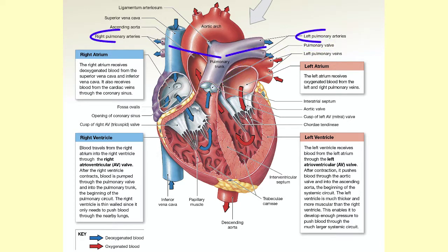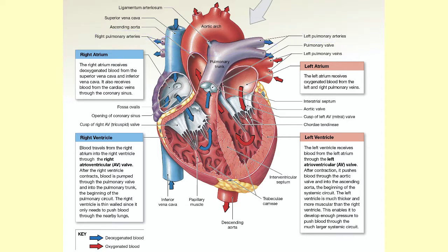Blood then travels along the pulmonary arteries and into the lungs through the pulmonary circuit. After right ventricular contraction, pressure within the pulmonary trunk drops, which closes the pulmonary valve and prevents blood from falling back toward the right ventricle.